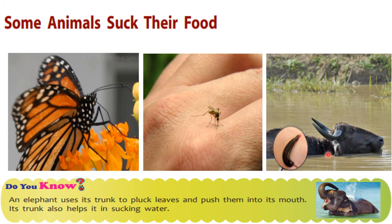Do you know that an elephant uses its trunk to pluck leaves and push them into its mouth? Its trunk also helps it in sucking water. See this picture — the elephant is taking a bath with the help of its trunk. So the trunk helps the elephant in sucking water to take a bath and to pluck leaves to push into its mouth.